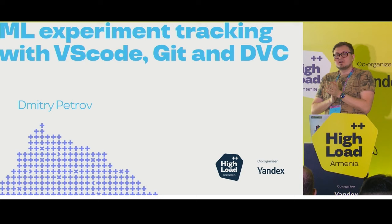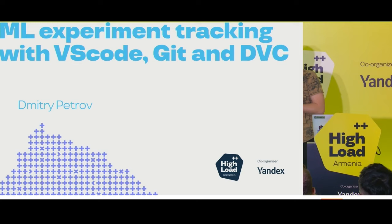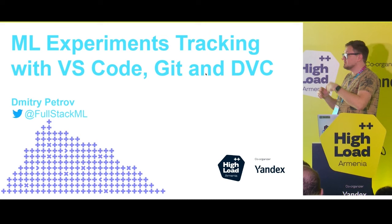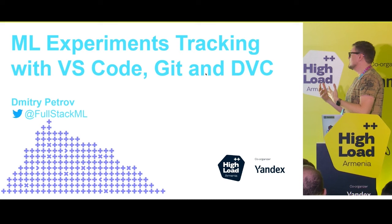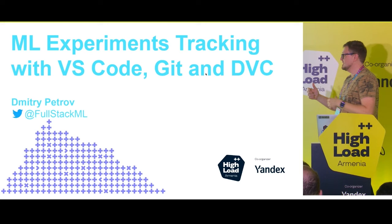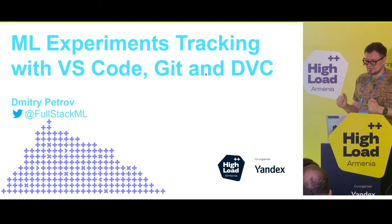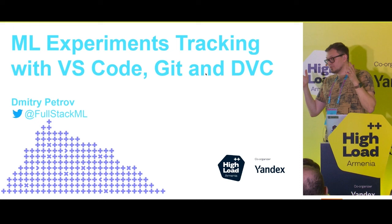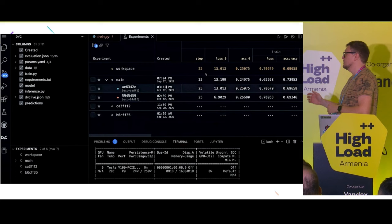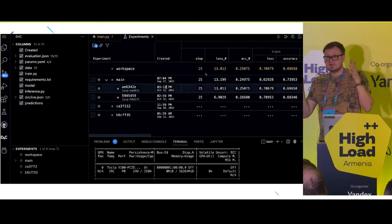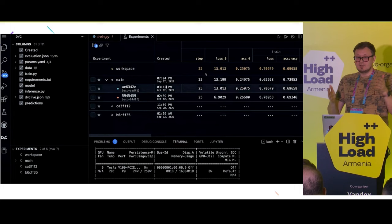Today we are going to talk about machine learning experiment tracking with VS Code, Git, and DVC. As we discussed, it will be about your local experience — tracking hundreds and thousands of experiments on your machine in VS Code, not necessarily on your laptop. It might be in the cloud, since VS Code is web-based and many companies use it there. Our goal is to get a table with dozens and hundreds of experiments in your VS Code experience next to your source code, tracking all hyperparameters and metrics while working within the IDE.